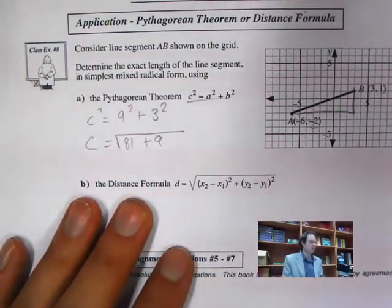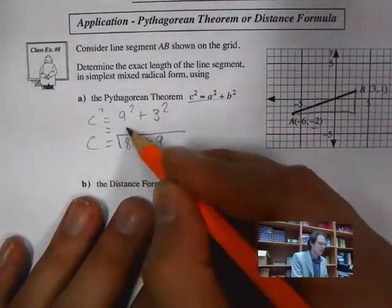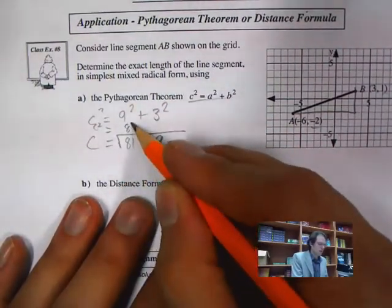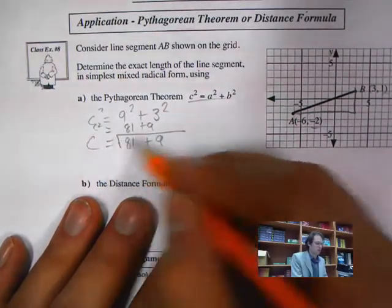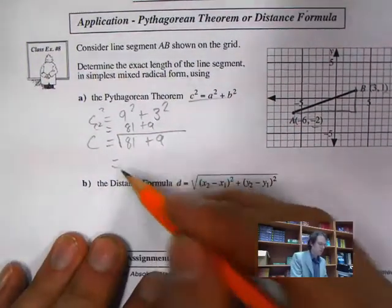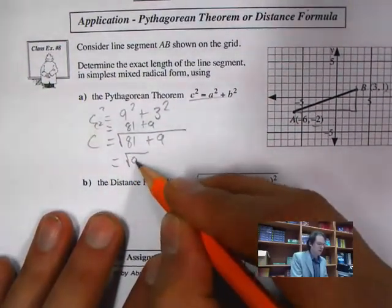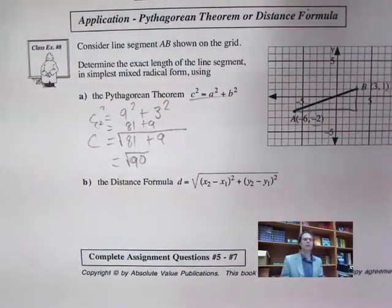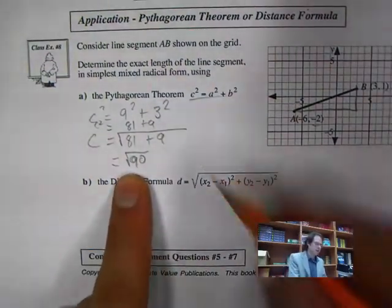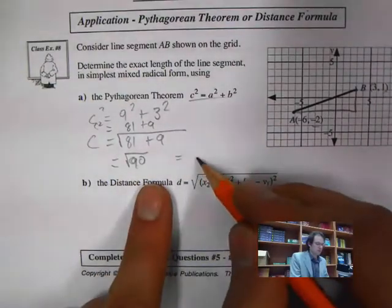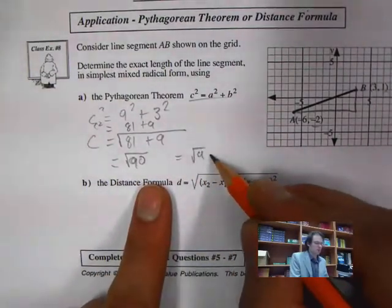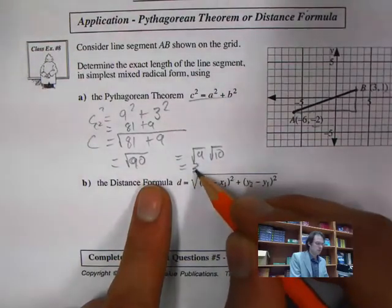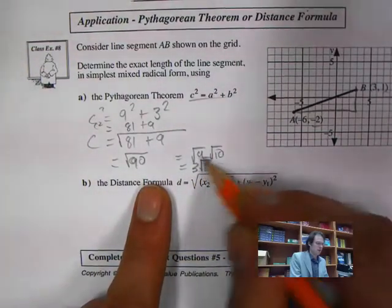So c equals the square root of 90. And 90 equals 9 times 10, so that's the square root of 9 times the square root of 10. The square root of 9 is 3, so the answer is 3 root 10.